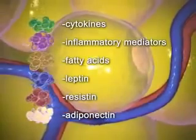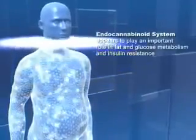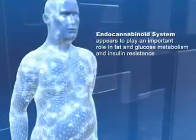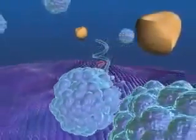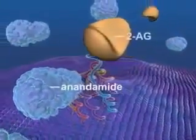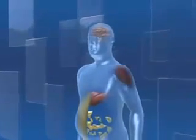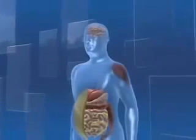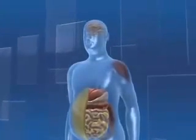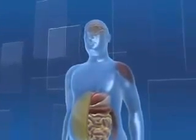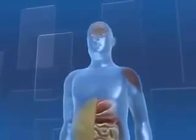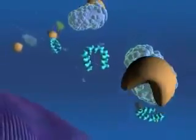Also called the ECS, the ECS appears to play an important role in fat and glucose metabolism and insulin resistance. The ECS consists of endocannabinoid signaling molecules — anandamide and 2-AG — and CB1 receptors. CB1 receptors are found centrally in the brain and peripherally in the adipose tissue, liver, skeletal muscle, gastrointestinal tract, and a variety of other tissues. Through mechanisms in these multiple sites, the ECS plays a role in the regulation of energy and substrate metabolism.